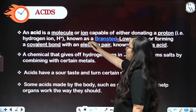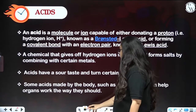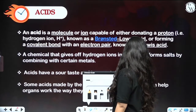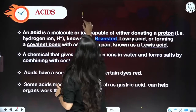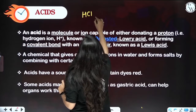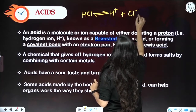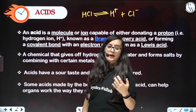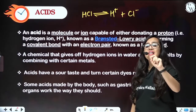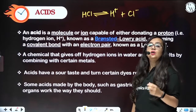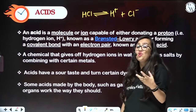An acid is a molecule or ion capable of donating a proton. It donates a proton — H plus donors. If you talk about HCl, it just gives away its H plus, which is a proton, and it is a very good acid. The basic thing is how easily a proton is donated — in that manner you can say how strong an acid is.